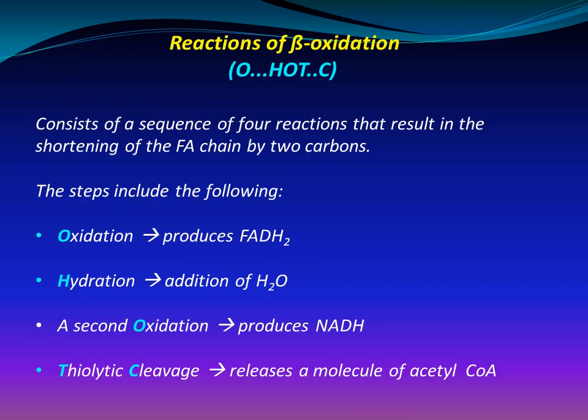Reactions of beta oxidation: beta oxidation consists of a sequence of four reactions that result in the shortening of the fatty acid chain by two carbons. The steps include: first, oxidation which produces FADH2; second, hydration — addition of a water molecule; third, a second oxidation which produces NADH; and fourth, thiolytic cleavage which releases a molecule of acetyl-CoA.